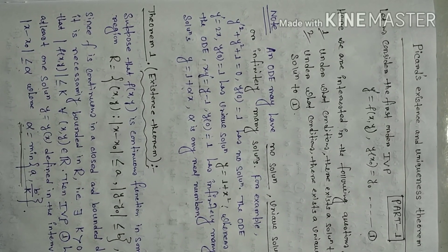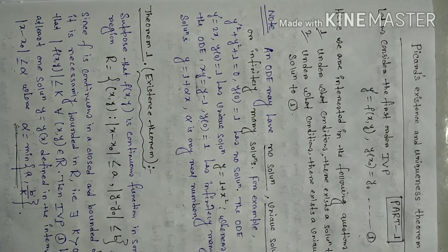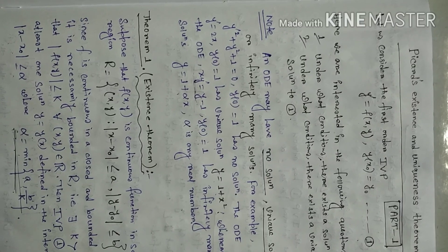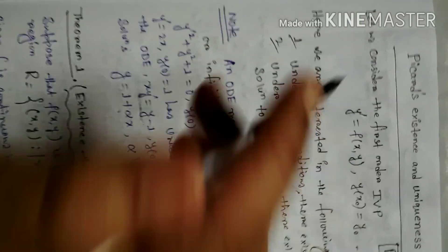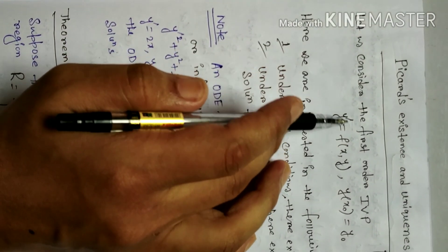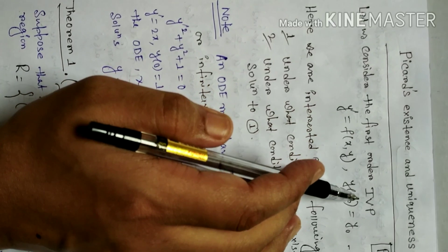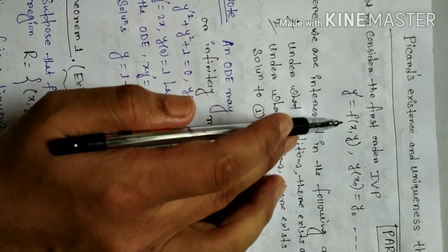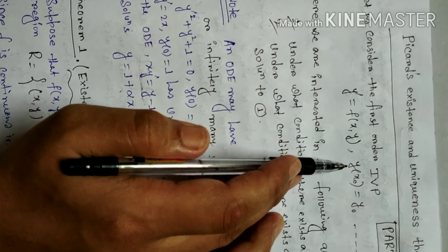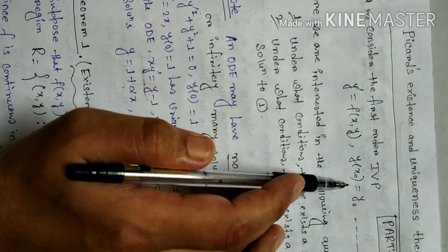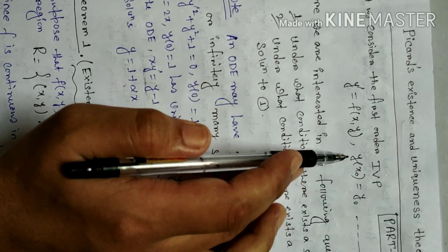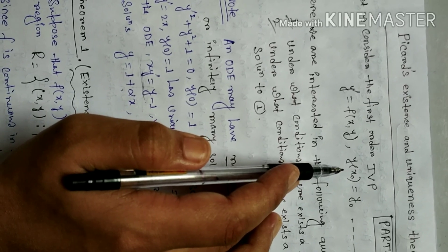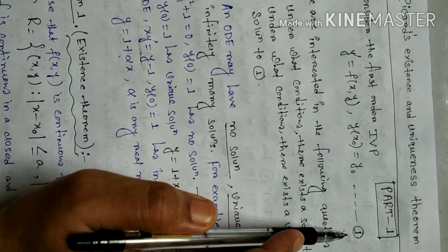Hello students. Today I will discuss Picard's existence and uniqueness theorem. Let us consider the first order initial value problem: y' equals f(x, y) under boundary condition y(x₀) = y₀, that is y equals y₀ when x equals x₀. This is equation number 1.